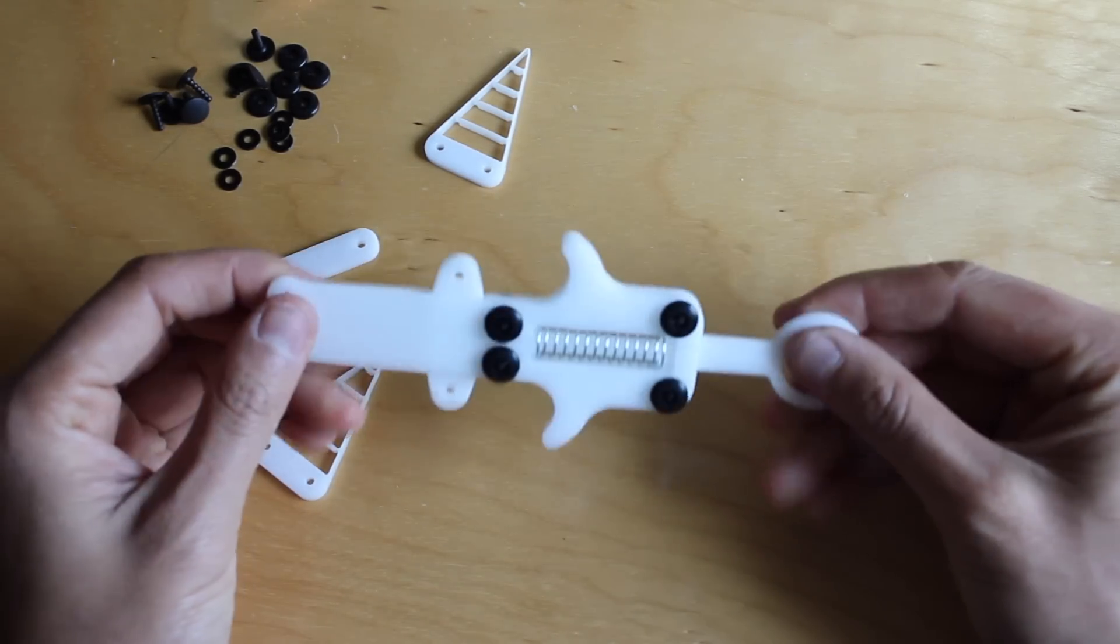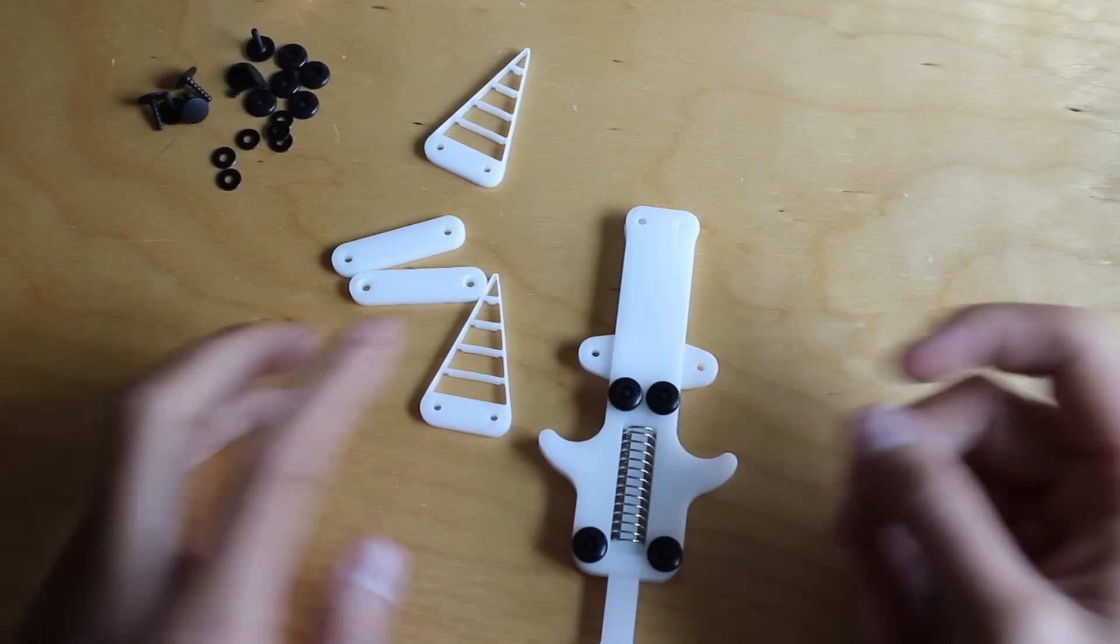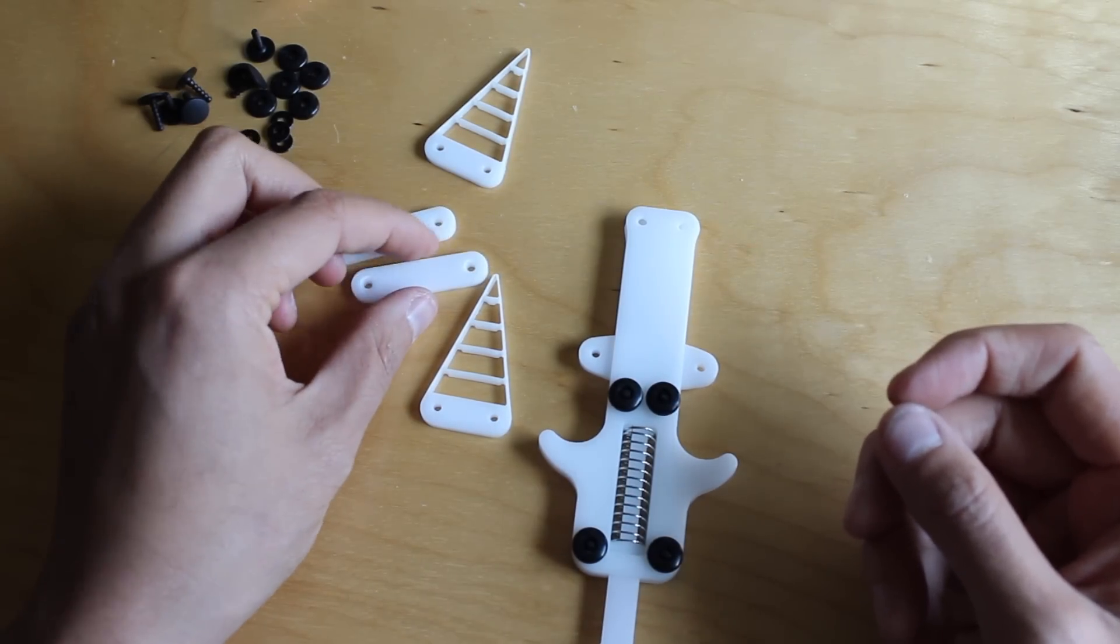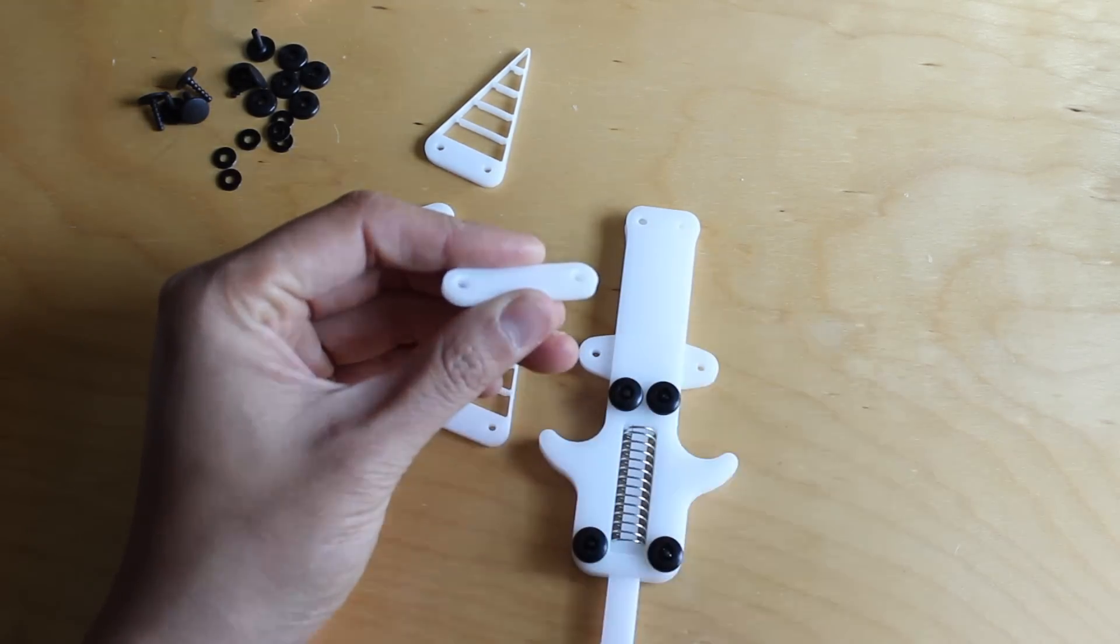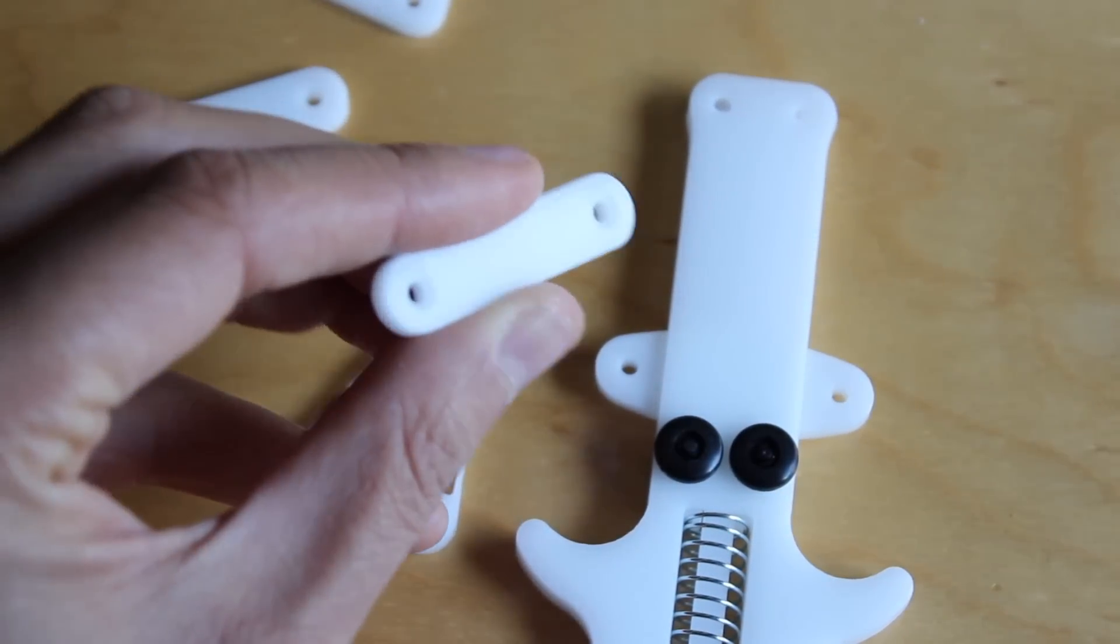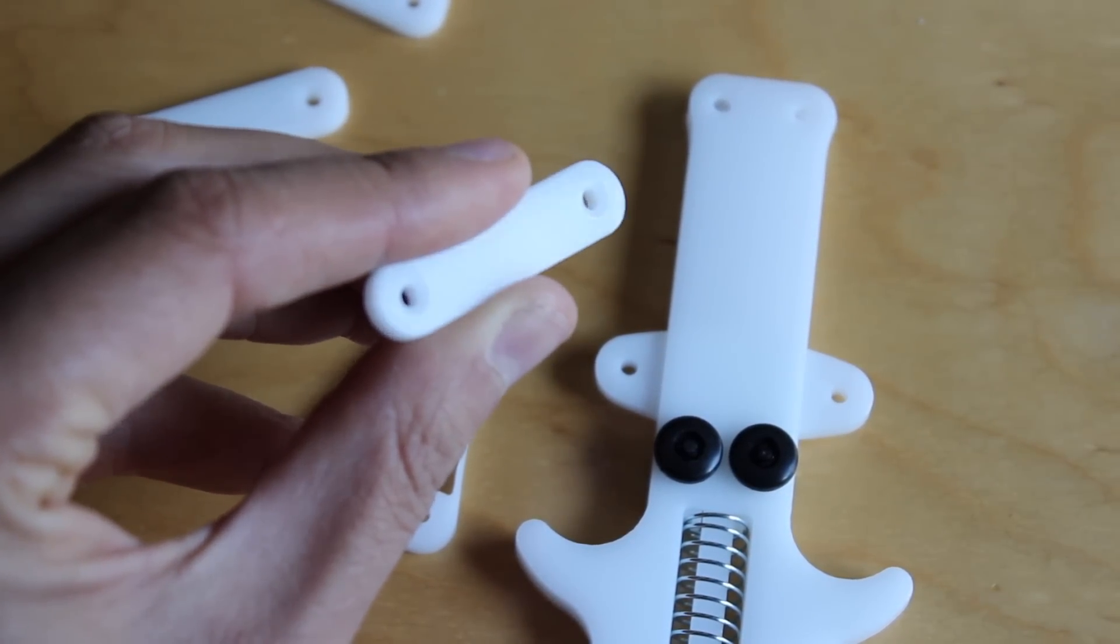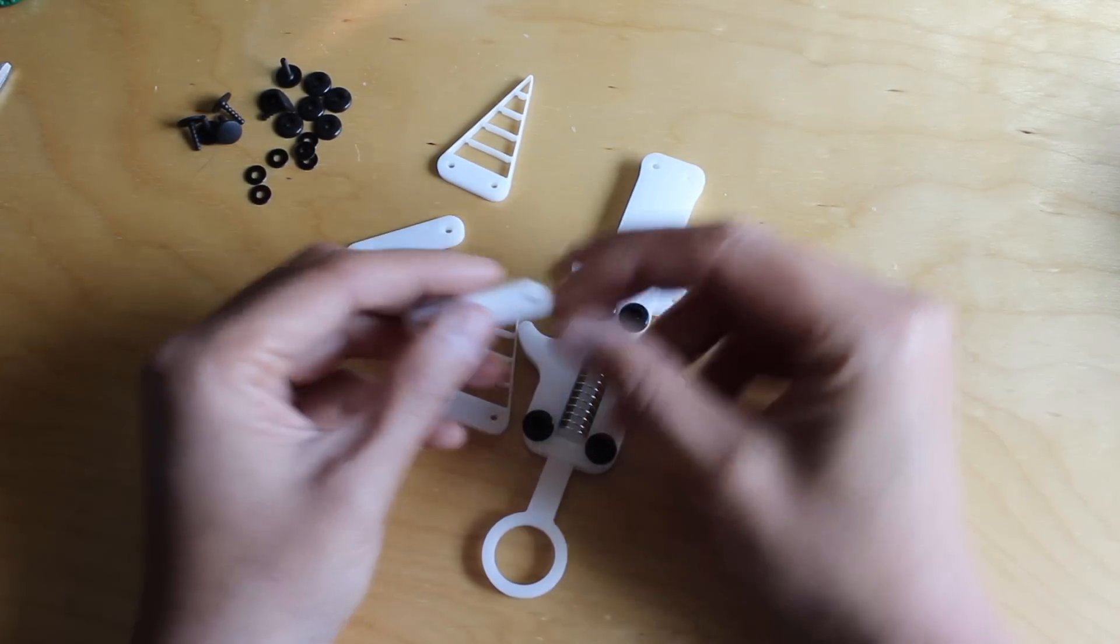That's very satisfying. Next we'll add these linkages and the actual flexure fingers themselves. For the links I also went ahead and laser etched a counterbore. So I'm just going to be careful about how I put the rivets back in.